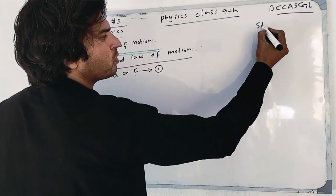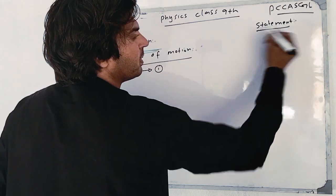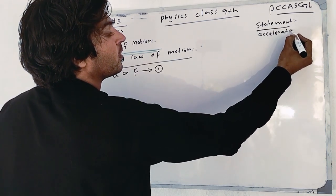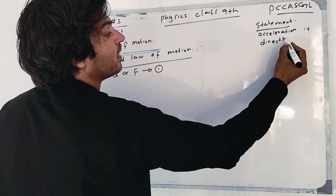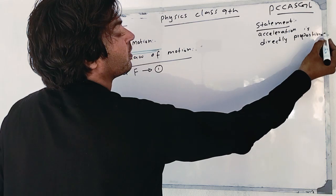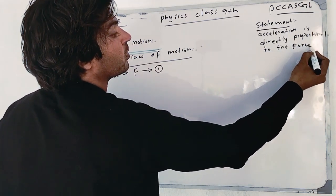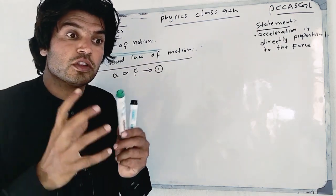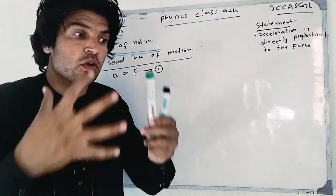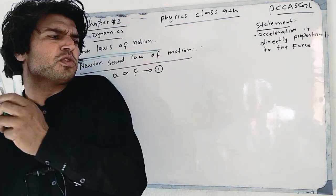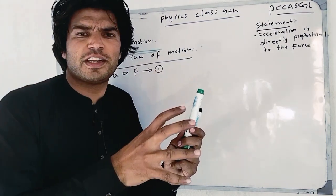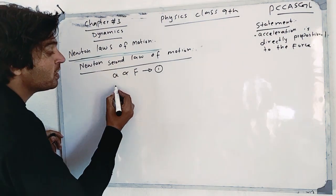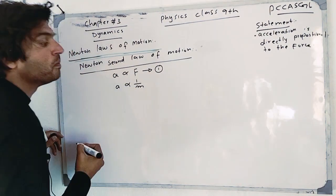Now let's write the statement. Newton's Second Law states that acceleration is directly proportional to the force applied — that is point number one. For point two, consider objects of different masses: a lighter object versus a heavier object. If you apply more force to a heavier mass, it gives less acceleration. So acceleration is inversely proportional to the mass of the body.